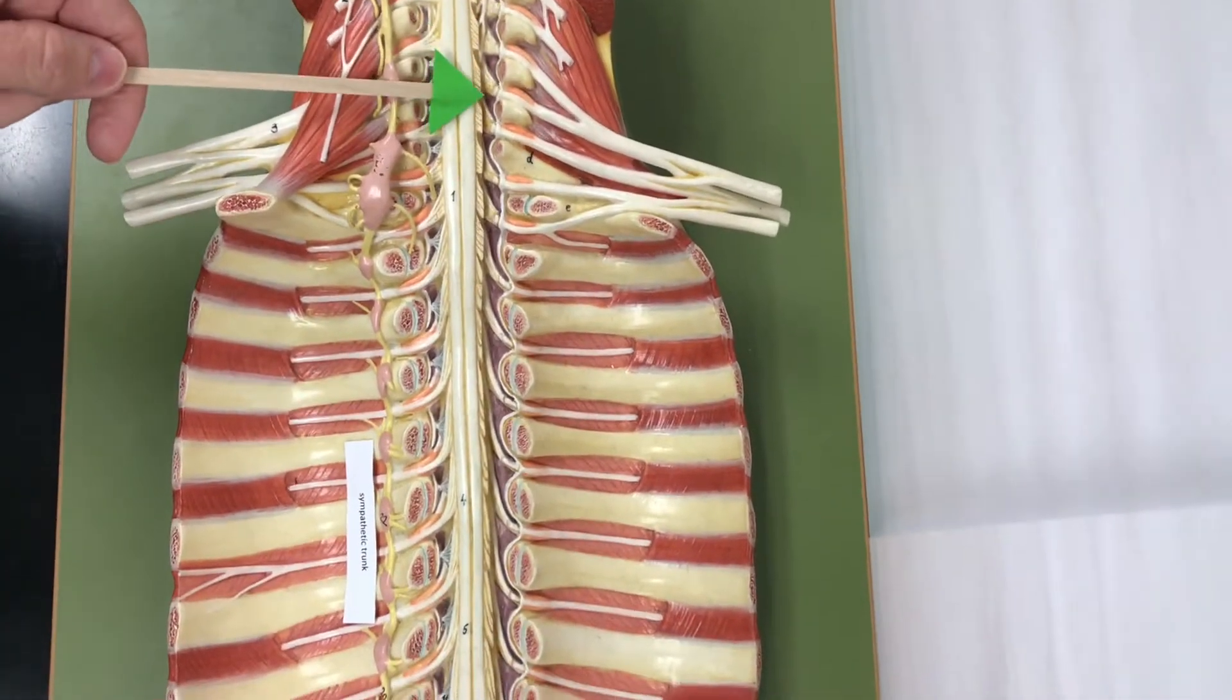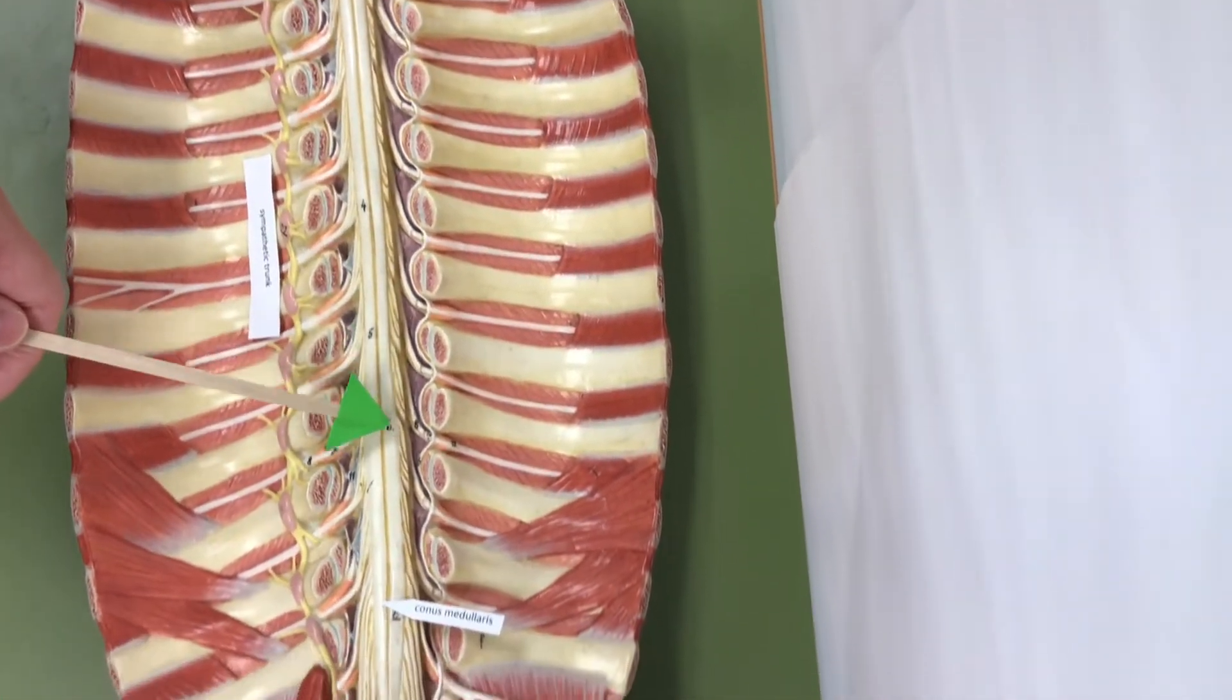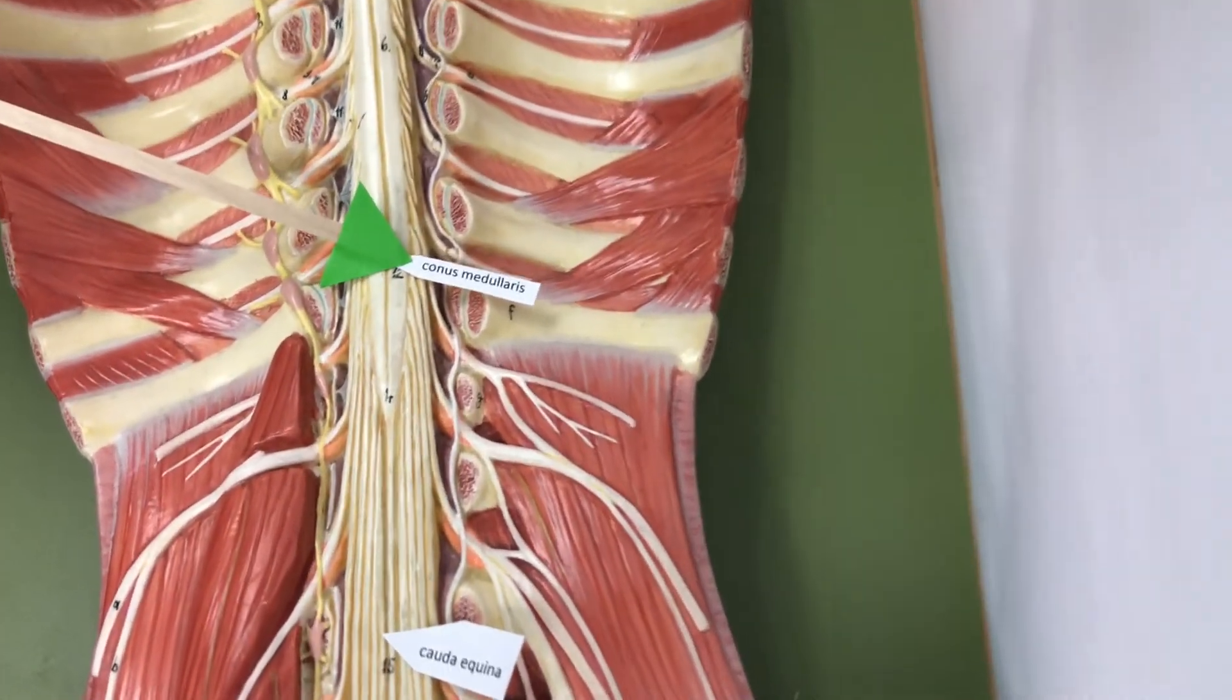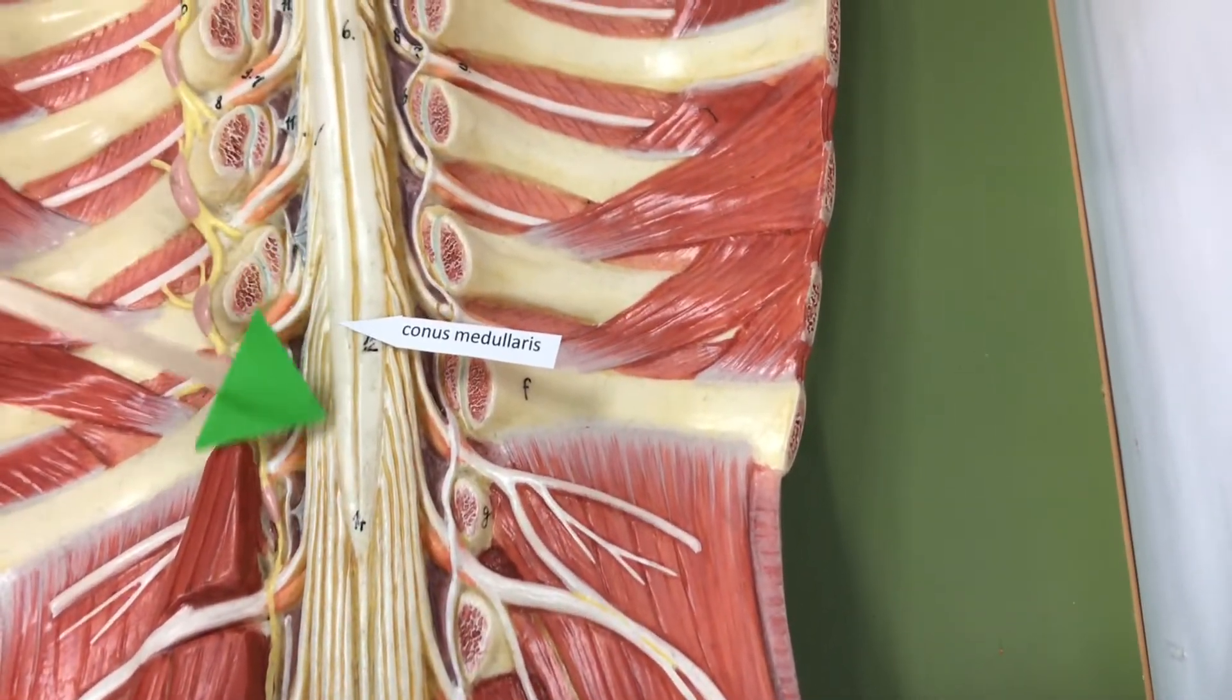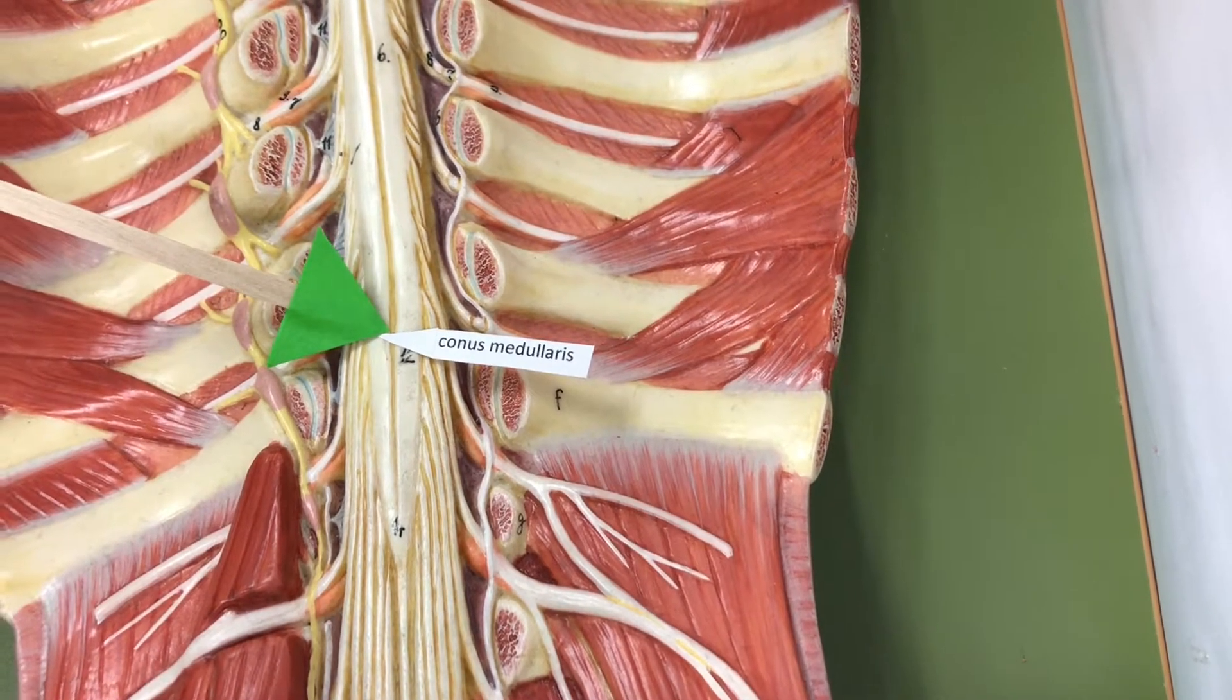We have cervical nerves, thoracic nerves, and lumbar nerves. The spinal cord comes down and ends in the lumbar region at the conus medullaris.